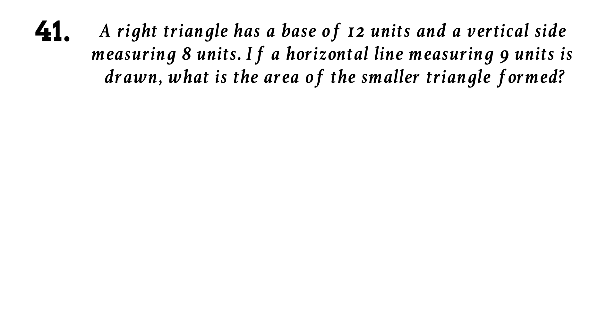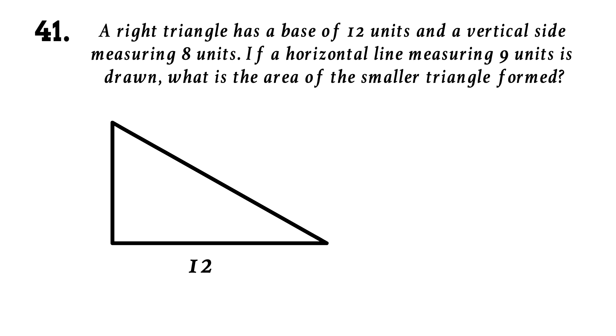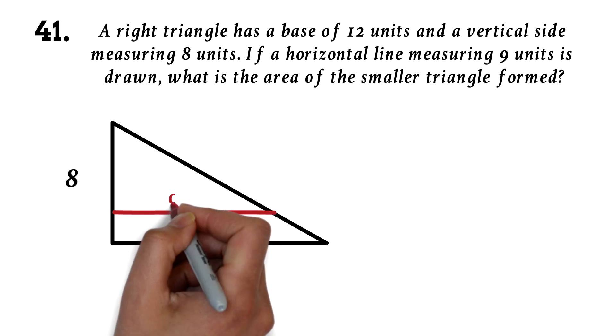Question 41. A right triangle has a base of 12 units and a vertical side measuring 8 units. If a horizontal line measuring 9 units is drawn, what is the area of the smaller triangle formed? In questions like this, it usually helps if you draw the figure. So here it is. We have the right triangle with base 12 units and side 8 units. We have the horizontal line measuring 9 units drawn.